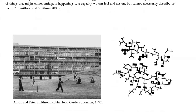Other thinkers have called this capability of urban design to relate to the social life between buildings 'the charged voids.' Alison and Peter Smithson wrote that architecture's charged void describes its capacity to charge the space around it with energy, which can join up with other energies, define the nature of things that might come, and anticipate happenings—a capacity we can feel and act on, but cannot necessarily describe or record. I would like to take you one step further and argue that we can indeed understand and analytically record some of these dynamics between environmental geometry and social life.